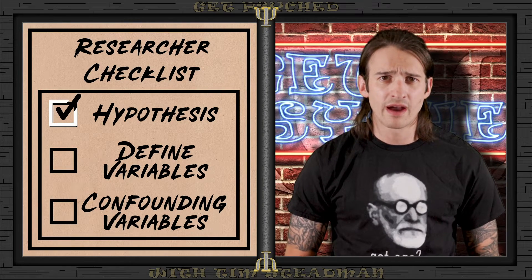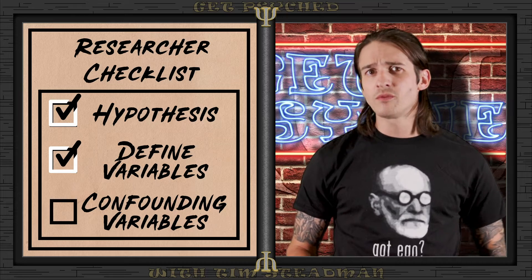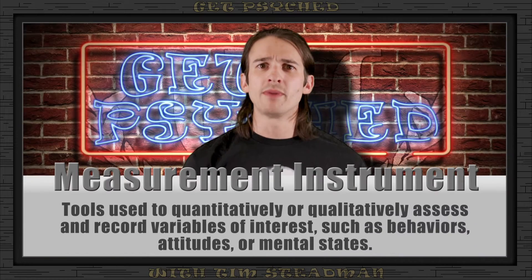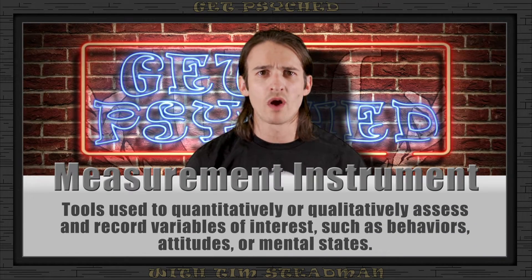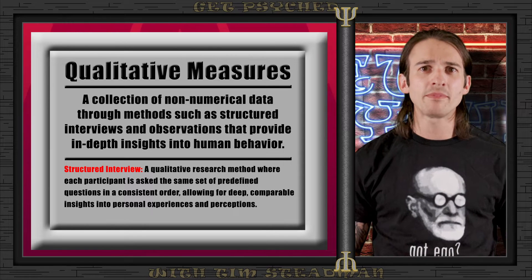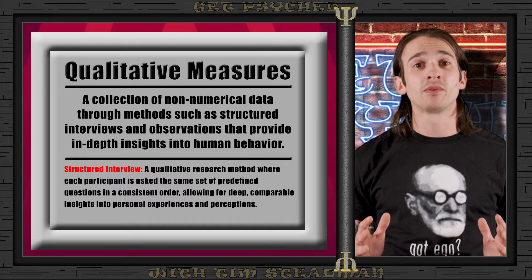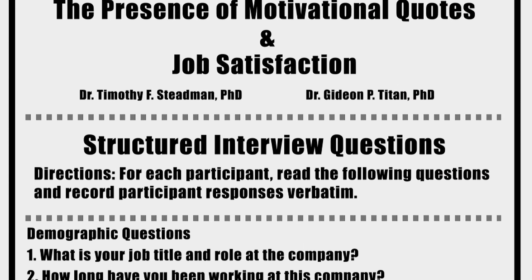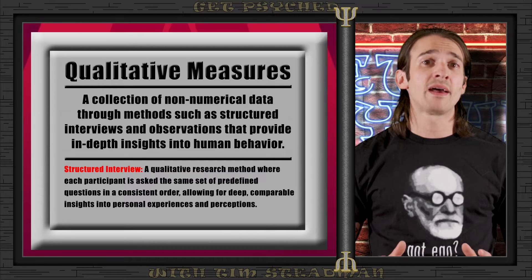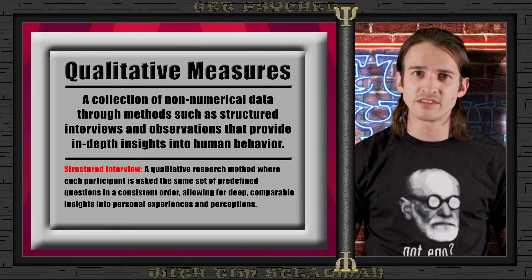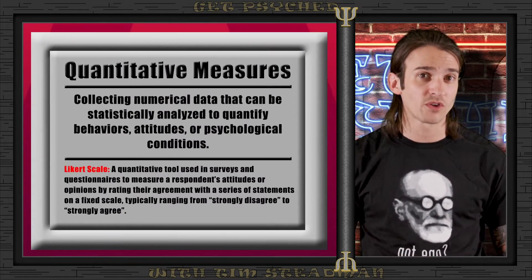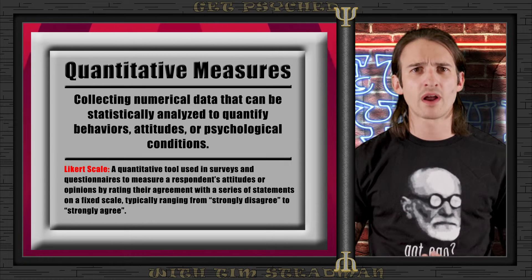We've come up with our hypothesis, identified and defined variables, and identified potential confounding variables. Now it's time to measure our experimental variables using qualitative or quantitative measurement instruments. Qualitative measures are tools used to collect non-numerical data, providing depth and detail to our understanding of human behavior. A great example is the structured interview — a carefully designed interview where each participant is asked the same set of predetermined questions in a specific order — allowing researchers to gather in-depth personal stories and rich, detailed data.